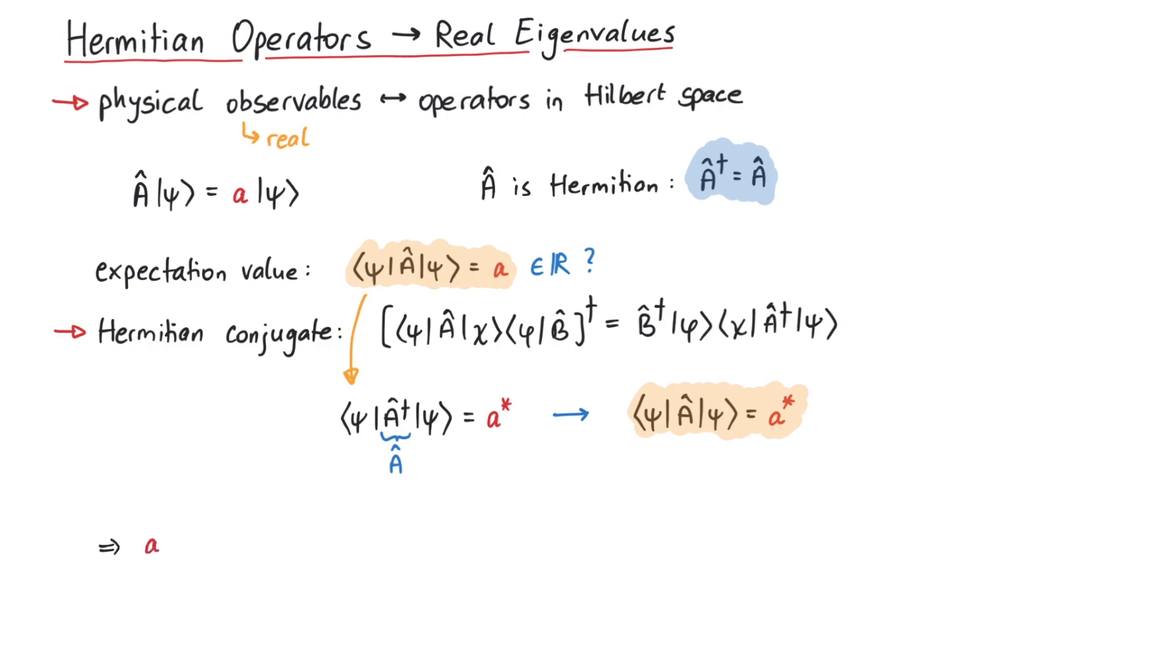Therefore, a equals a star. If a number is equal to its complex conjugate, then it cannot have an imaginary part, and we can conclude that the eigenvalue a is a real number.